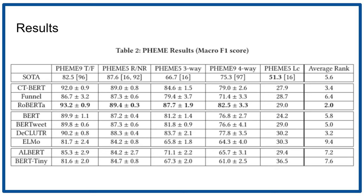What we see here is that, in general, the language models do quite well. RoBERTa, in particular, gives the best performance on four out of the five experiments, and there are several others that give good performance too — for example, CT-BERT and DeCLUTR. And in several of these cases, they're giving significantly better performance than the state-of-the-art model.